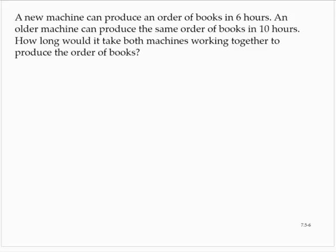A new machine can produce an order of books in six hours. An older machine can produce the same order of books in 10 hours. How long would it take both machines working together to produce the order of books?